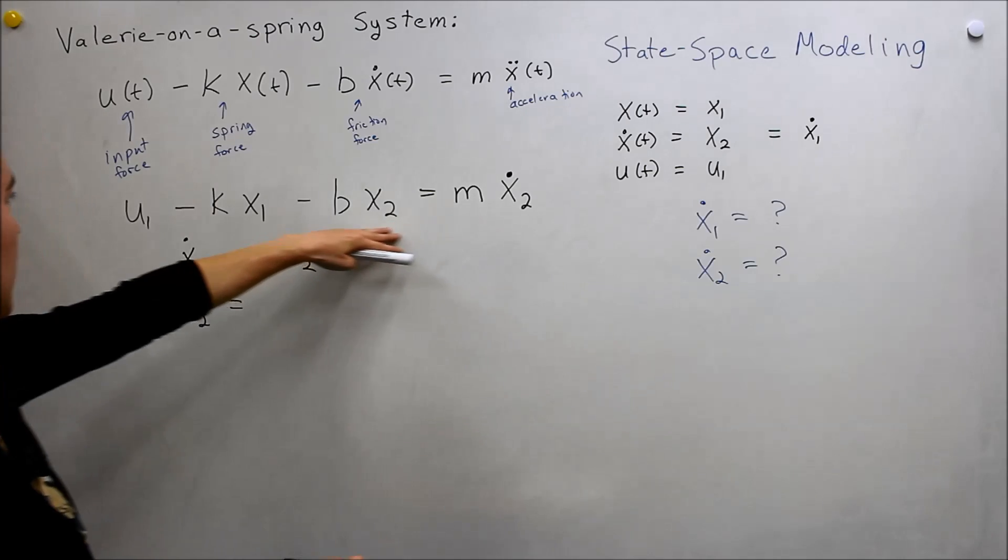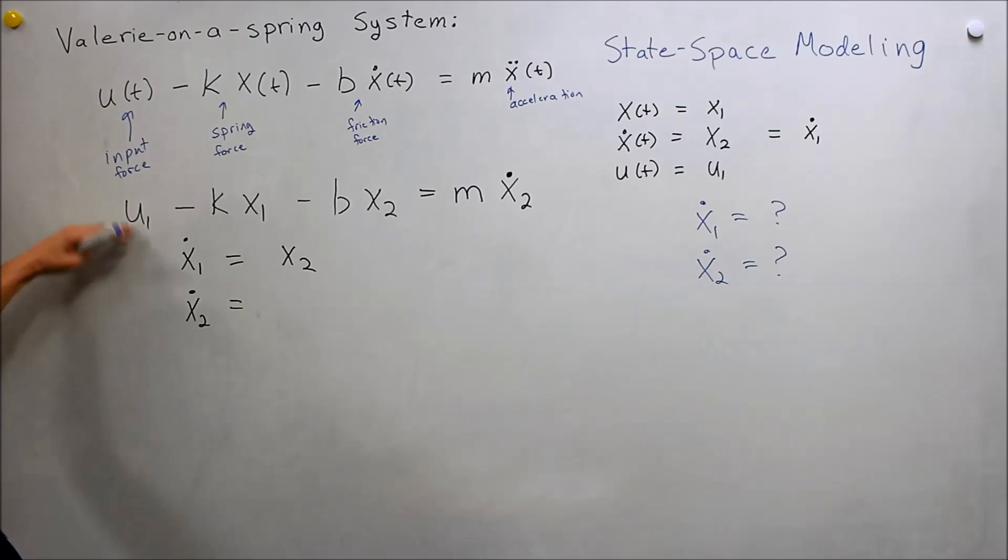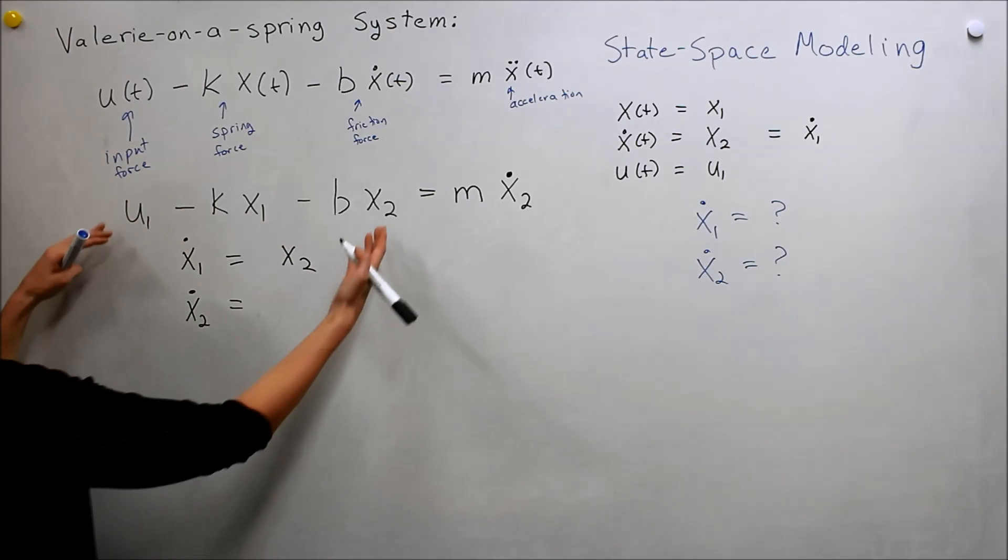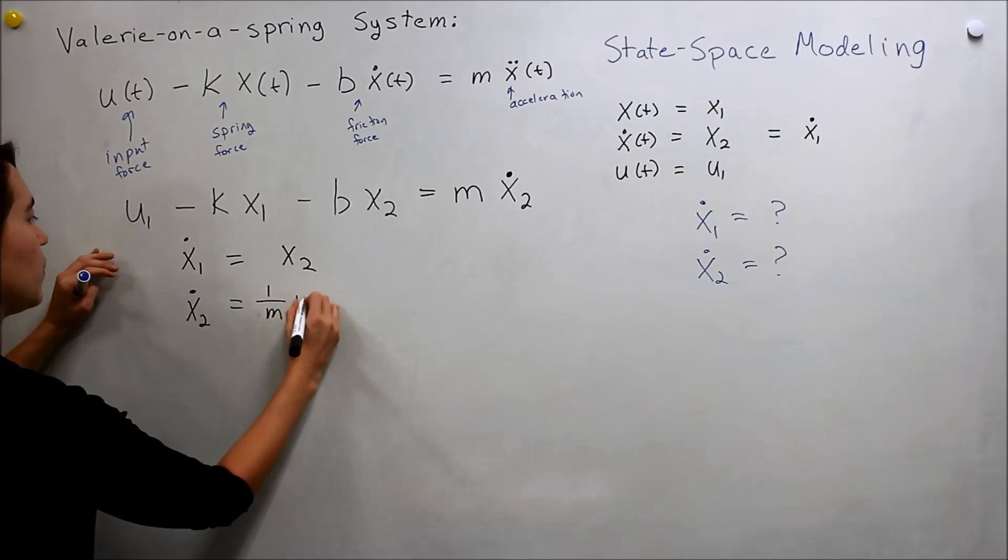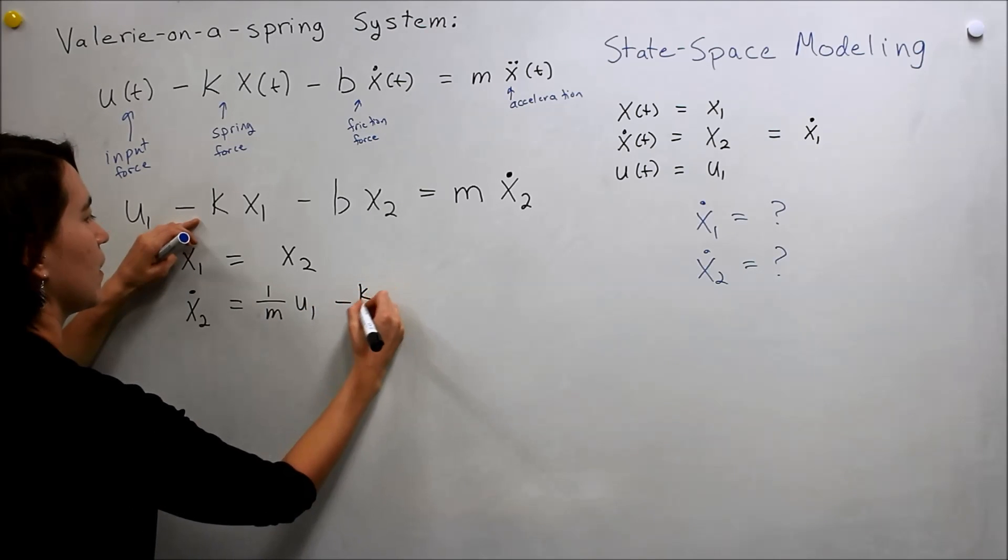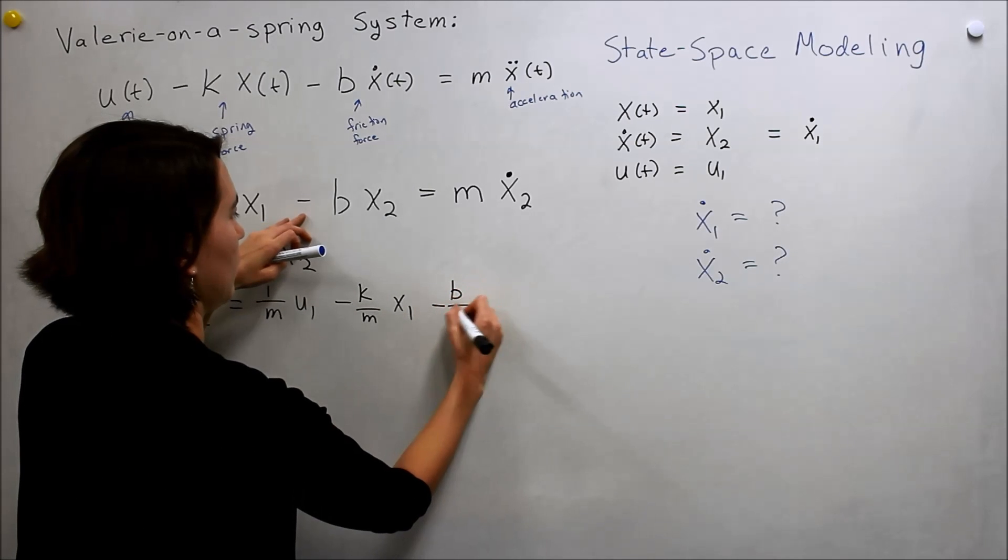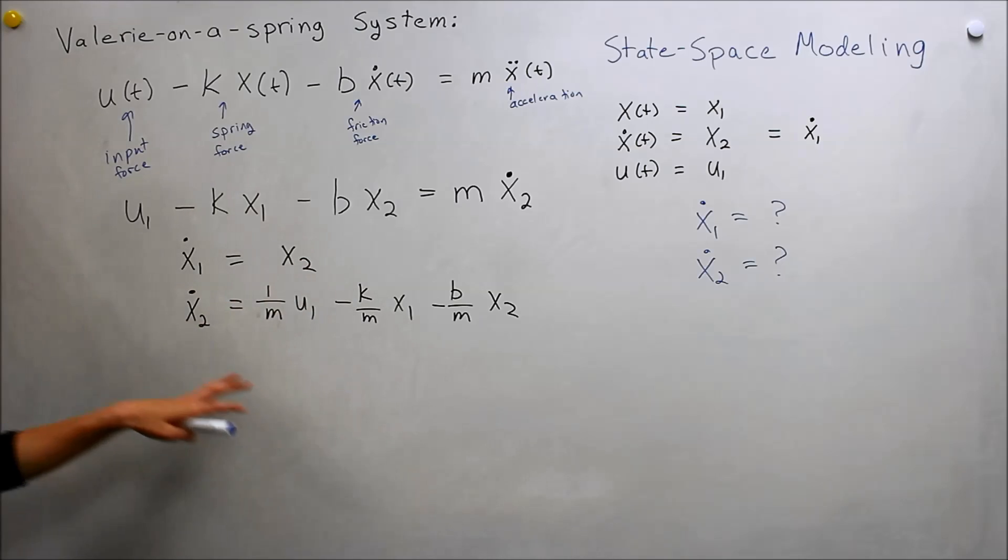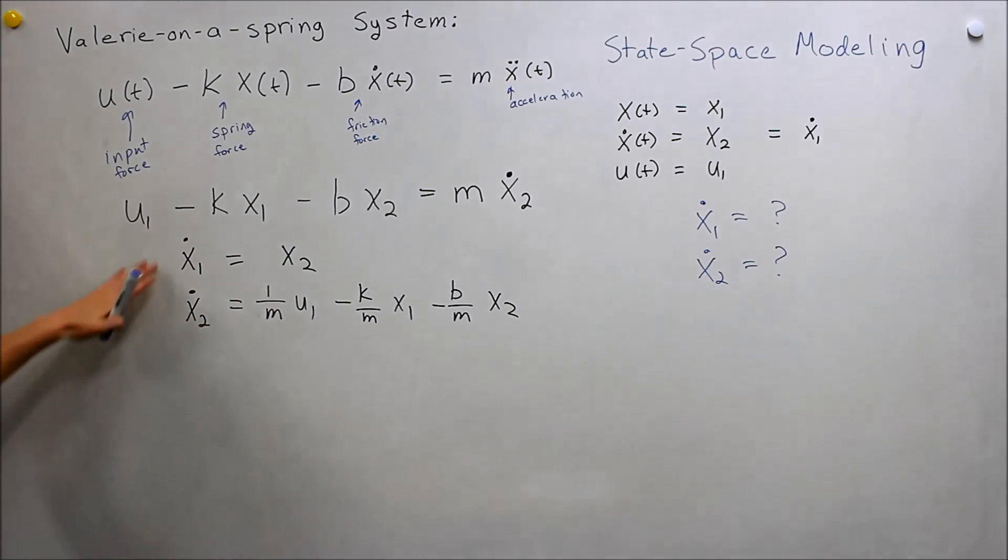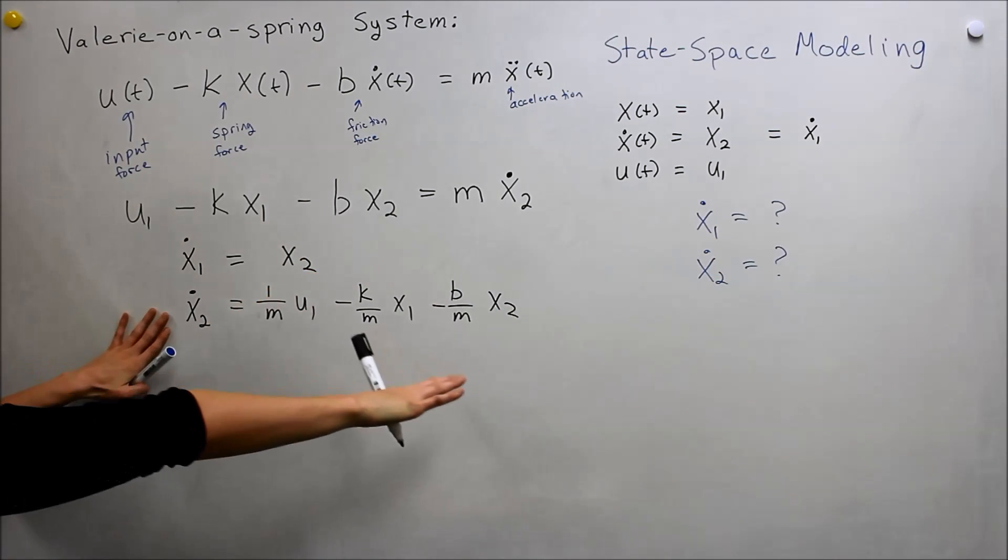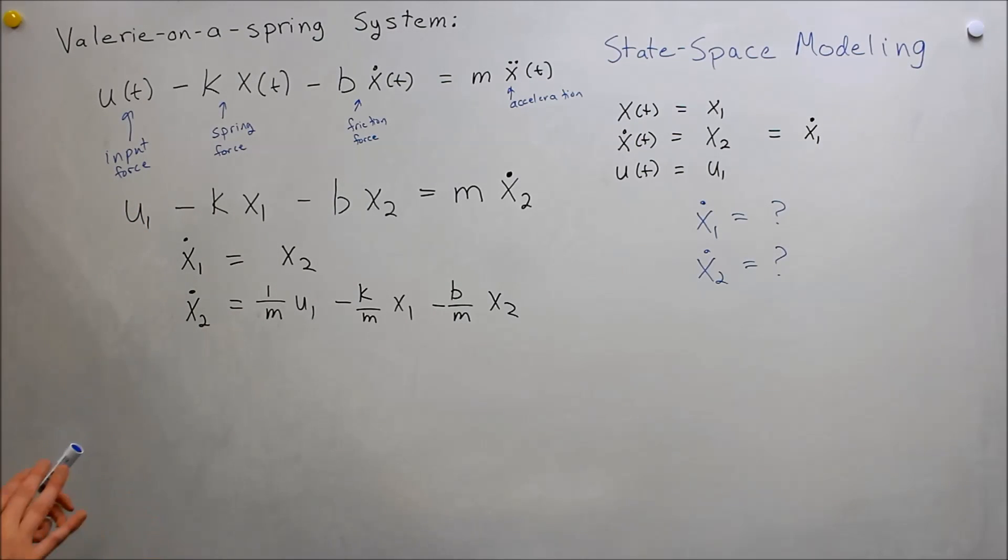Now, what about x2 dot? Well, we have this equation, right? And we have our x2 dot here. So if we want to write that independently, we can move this m over, divide the whole thing by 1 over m. And we can get, so we'll do 1 over m u1, minus k over m x1, minus b over m x2. So we found an equation just by renaming our variables here. And we have x1 dot equal to something, and x2 dot equal to our other variables.